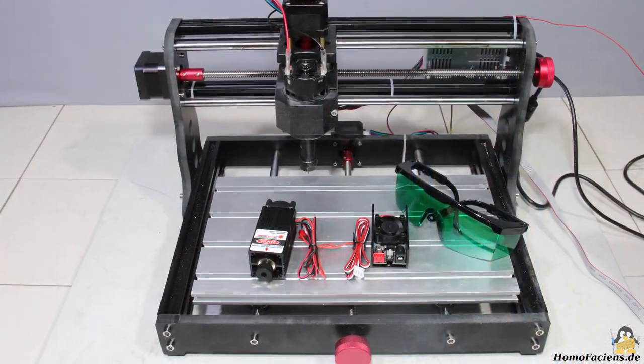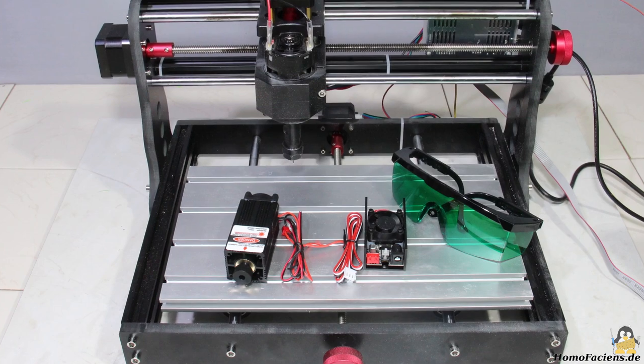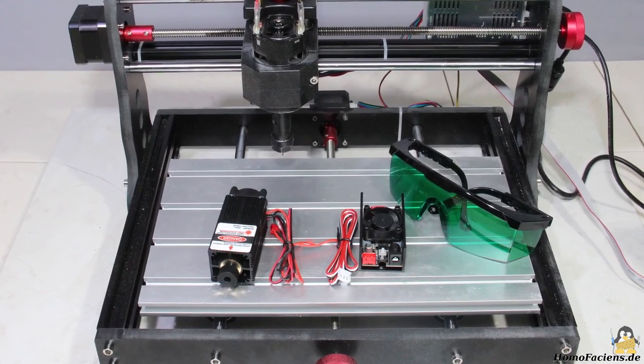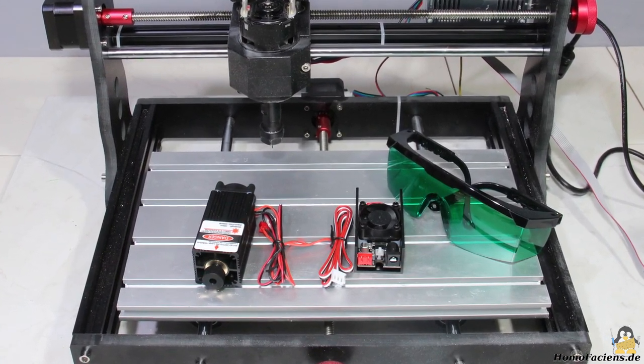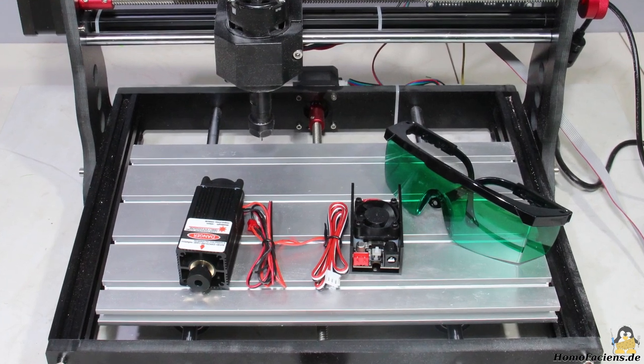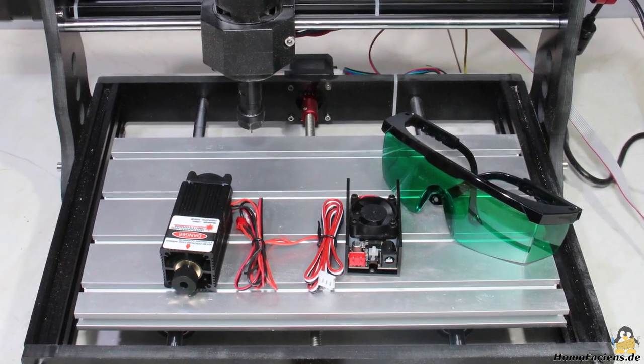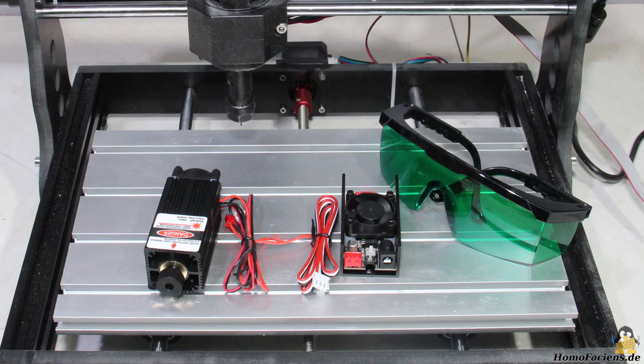The next step is to label the top using the 5.5W laser module. This device is connected to the electronics of the CNC with a separate control unit, for which only one additional cable is required.